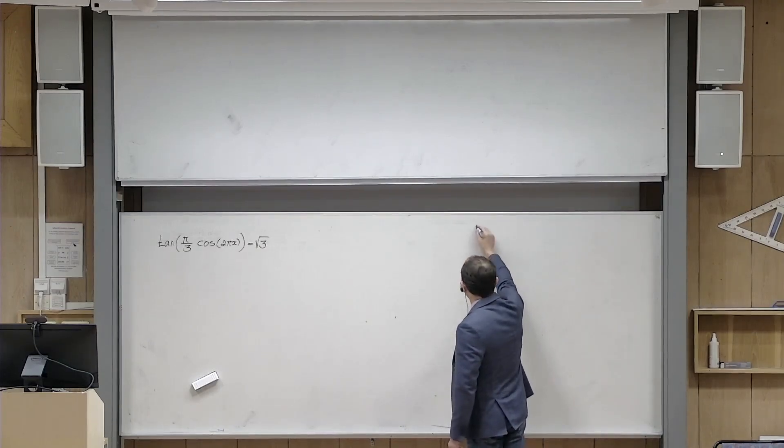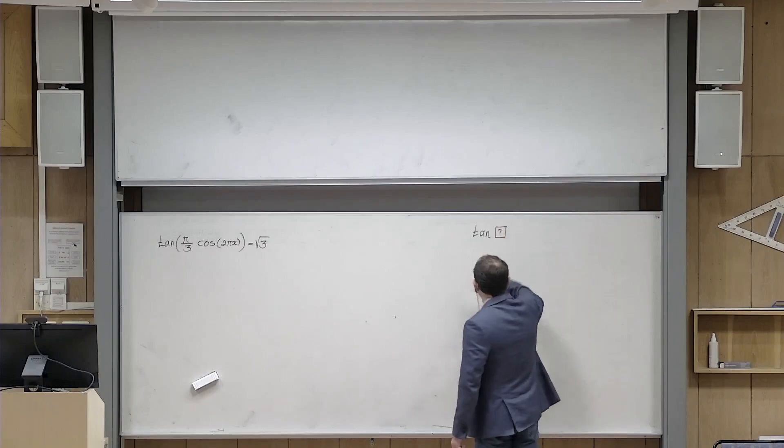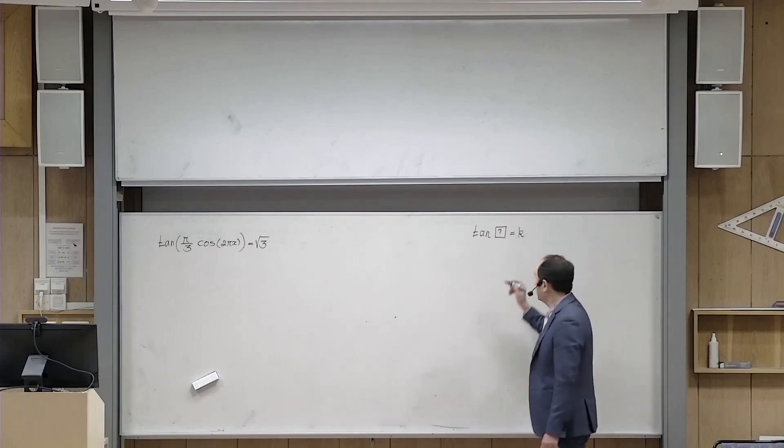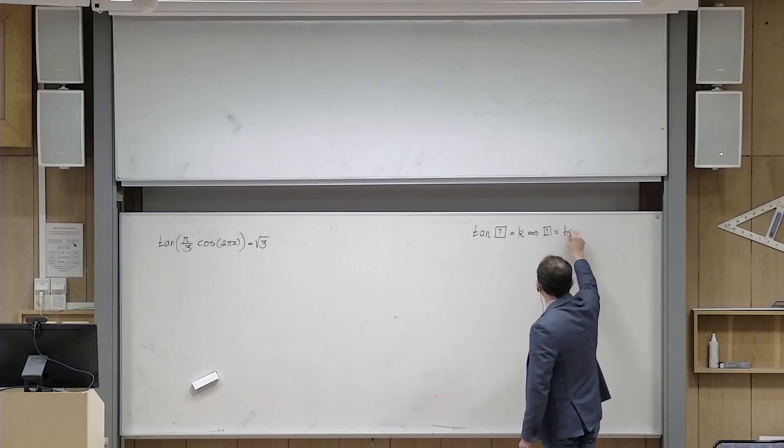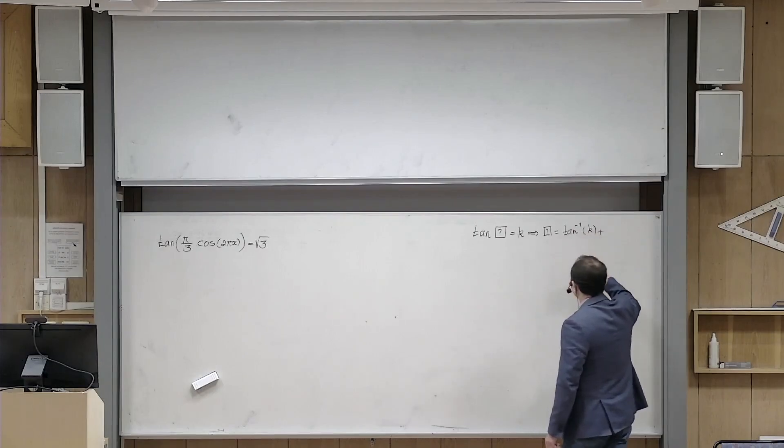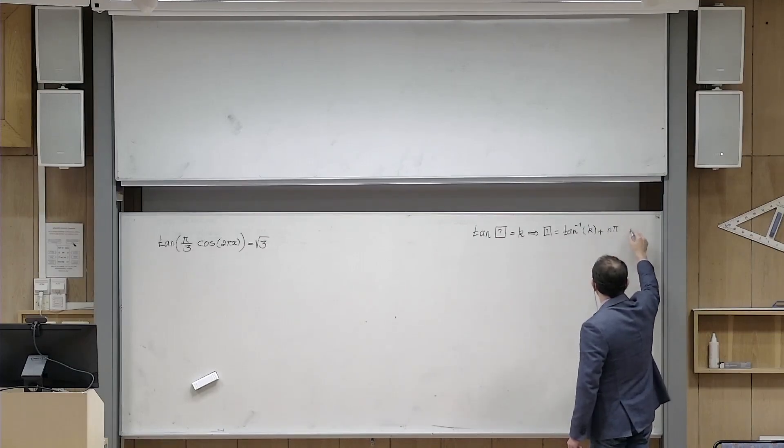There are two formulas that are important for us in this problem. One formula is: if you have tangent of a box, anything inside the box which is unknown, equal to a number k, then what is inside the box equals tangent inverse of that number plus an integer multiple of pi. So n pi, where n is an integer.